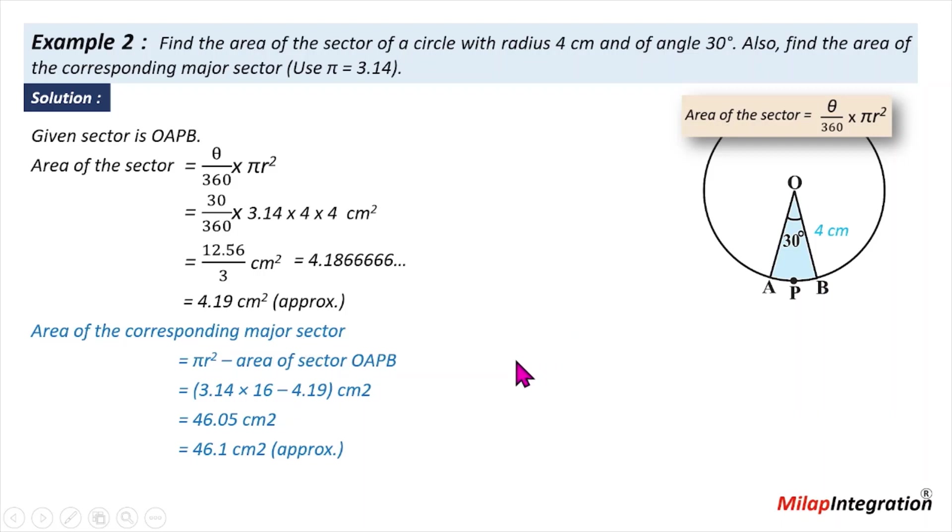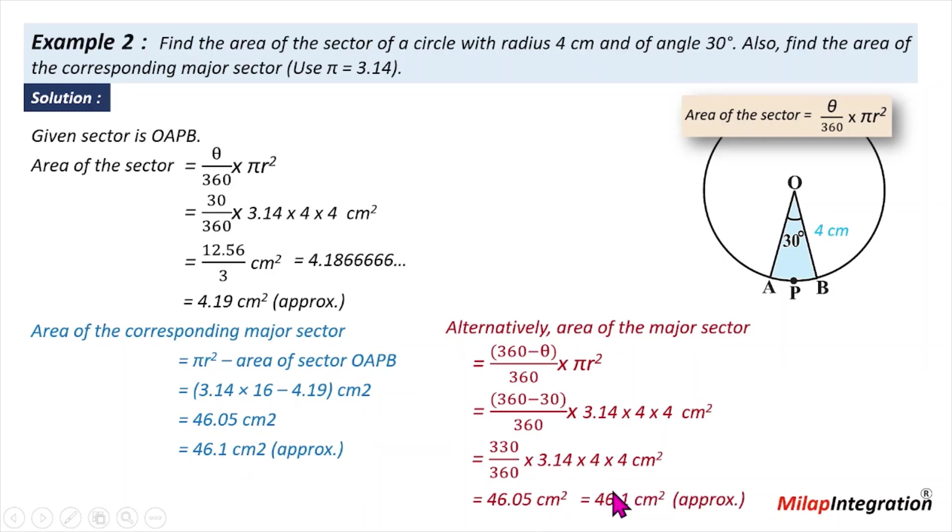Now, I have the alternate way to calculate the area of the major sector. The alternate way is: if it is 30 degrees, the remaining sector is 330. So we can use this formula, 360 minus theta, that means 360 minus 30 upon 360 into pi r square. This is the major angle. The major angle is 360 minus 30 into this, and that means 330 upon 360. Once you solve it, you will get the final answer. That is 46.05, approximately 46.1 centimeter square approximately.